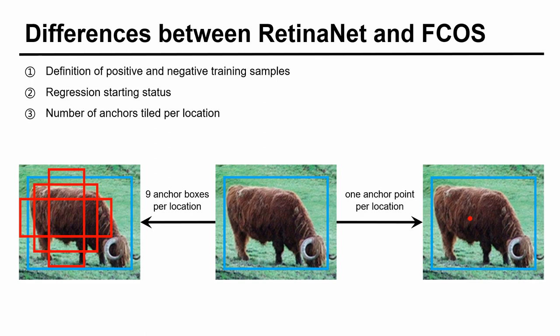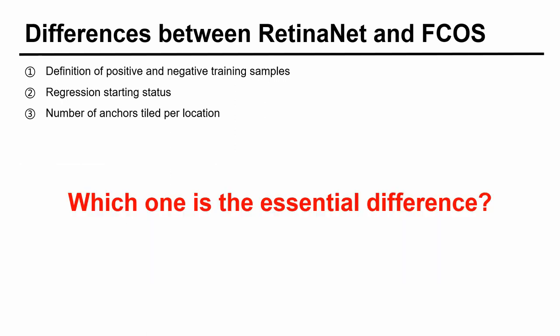The third one is the number of anchors tiled per location. RetinaNet tiles nine anchor boxes while FCOS tiles one anchor point per location. We want to explore which of them are essential differences.